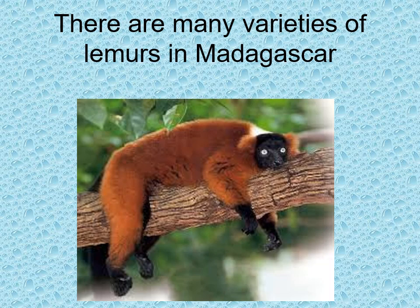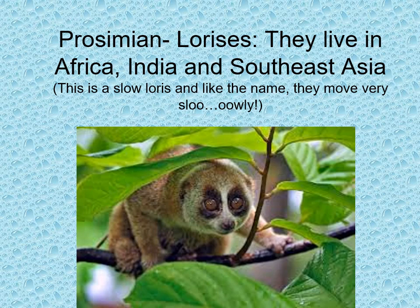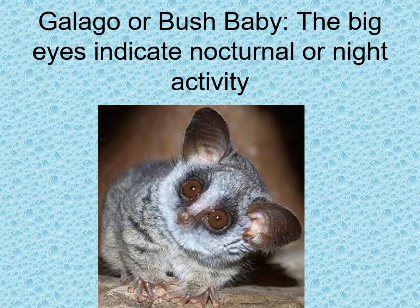There are many varieties of lemurs in Madagascar. The other type of prosimian is the loris — again, they live in Africa, India, and Southeast Asia. This is a picture of a slow loris and, like the name, they move very slowly. Please note the eyes — the eyes indicate a nocturnal adaptation, meaning night-active. They sleep during the day in little nests and then at night come out and hunt for insects through the forest.